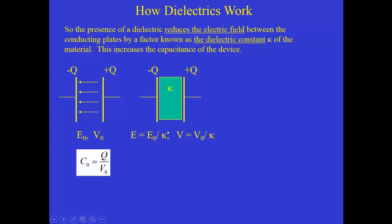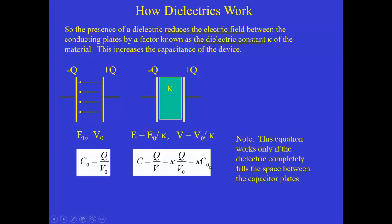And since electric field and voltage are proportional to one another, the voltage is also reduced. The potential difference is also reduced. So if we look at the definition of capacitance, C equals Q over V, the V that we now have is V0 over K, which means there's a factor of kappa in the numerator. So the new capacitance of the filled capacitor is kappa times the capacitance of the empty capacitor.